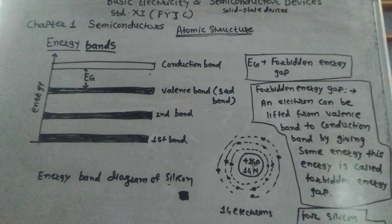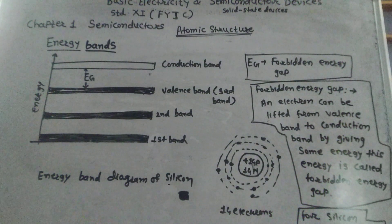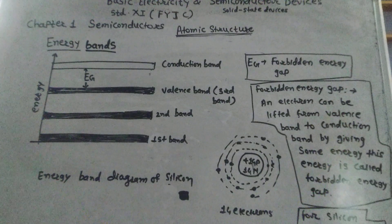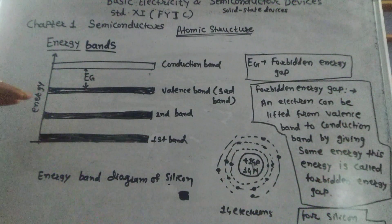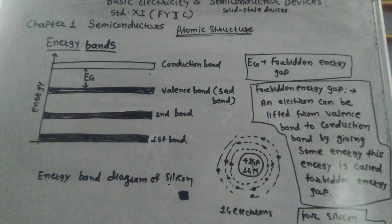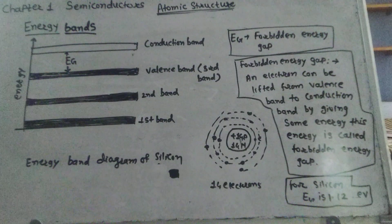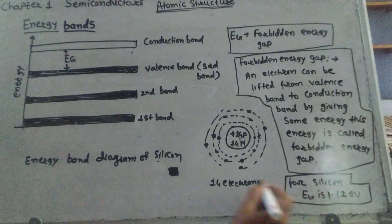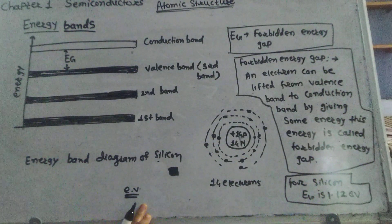An electron can be lifted from the valence band to the conduction band when we apply some external energy equal to EG, the forbidden energy gap. For silicon, this external energy required is 1.12 electron volt. Electron volt is a unit of energy.